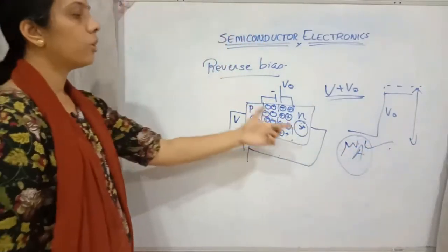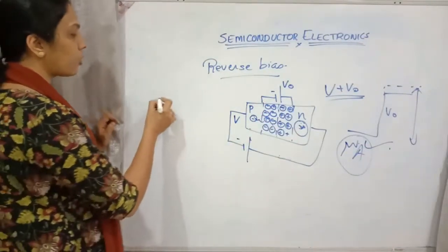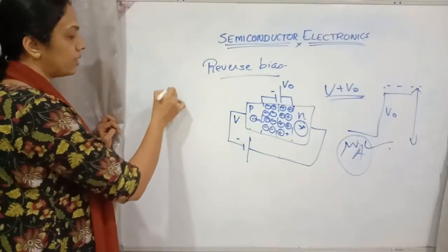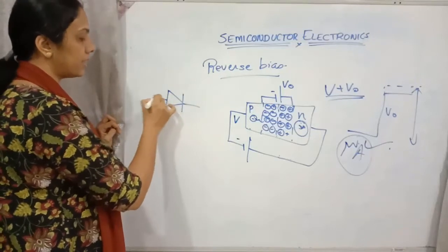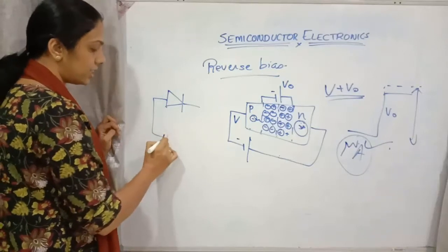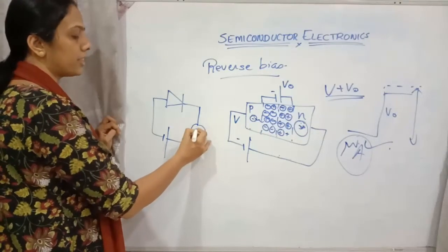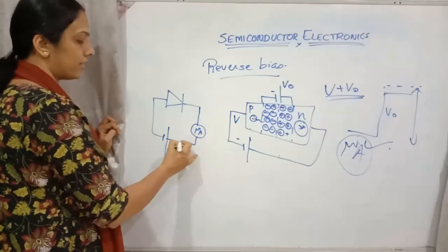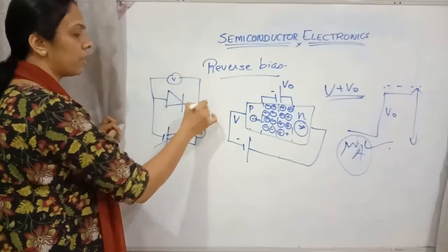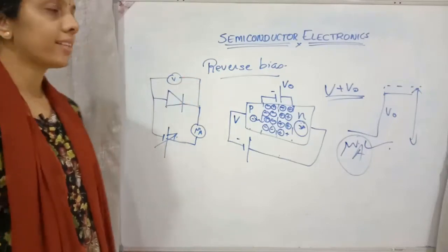That amount of current is measured in microamps. For practical purposes, the circuit diagram for reverse biasing connects P to the negative terminal and N to the positive terminal of a variable potential source, with a microammeter connected in the circuit. This is the circuit for reverse biasing.